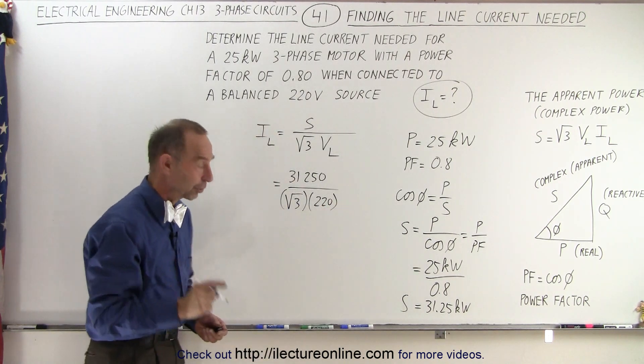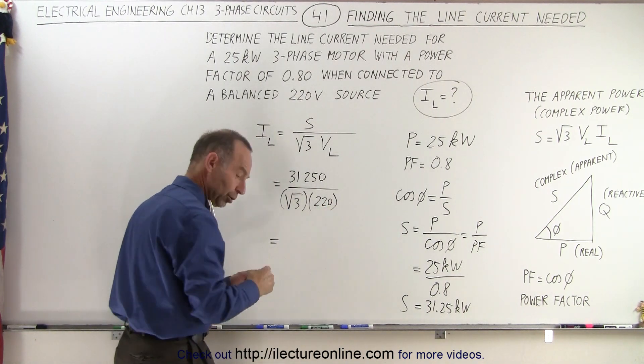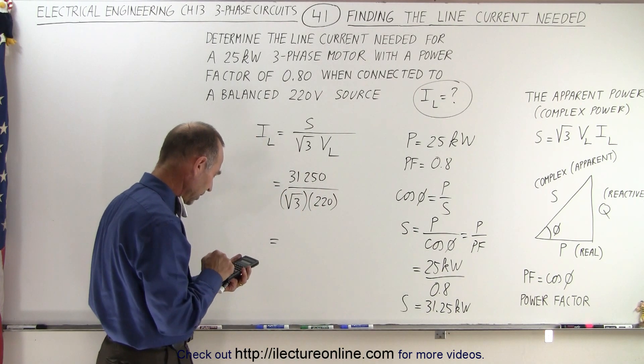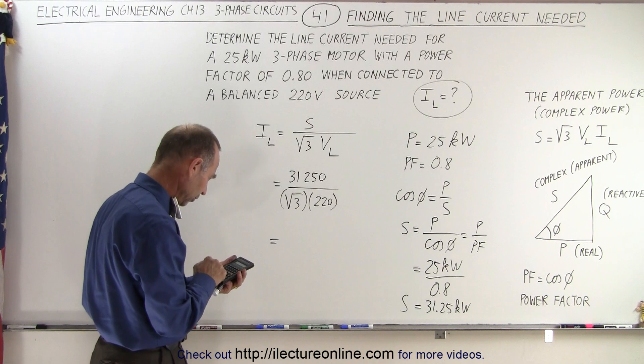This will give us the line current. So divide by the square root of three, divide by 220.